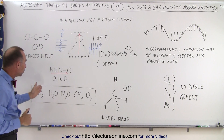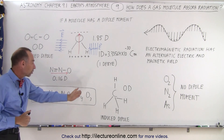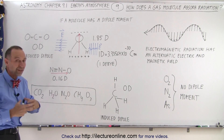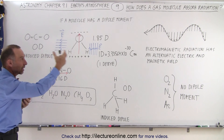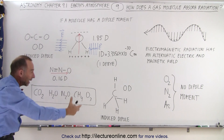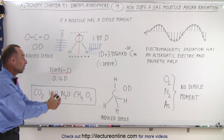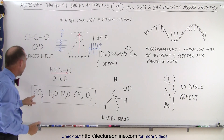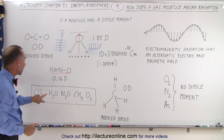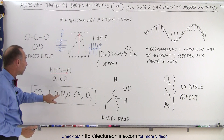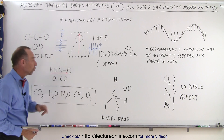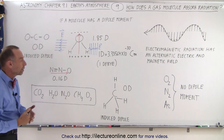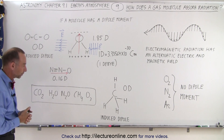So the five most important molecules in the atmosphere that are able to interact with electromagnetic radiation and absorb some of that radiation are: carbon dioxide, water vapor, nitrous oxide, methane, and ozone — the O₃ molecule.